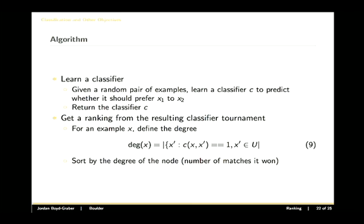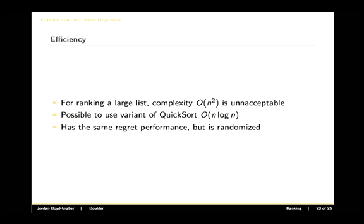The way that this works is that you learn a classifier in the following way. You take a random pair of examples and then you learn a classifier to predict whether it should prefer the first to the second. This is a lot like the preference function that we talked about for boosting. Then you return this classifier C. When it comes to form a ranking, you basically run a tournament. Given an example, you count up the number of times it beat other examples, and then you sort all of those examples based on the number of pairwise classifications that it won.